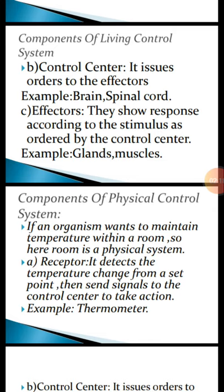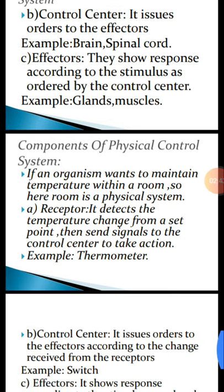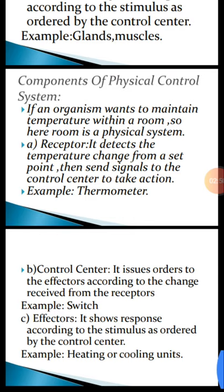Now we will discuss the components of the physical control system. Generally, if an organism wants to maintain temperature within a room, the room will be the physical system. It also has three components. The first is the receptor or sensor, which detects temperature change from a set point and sends signals to the control center. For example, a thermometer. The second component is also the control center, which issues orders to the effectors according to the stimulus received from the receptors. Its example is a switch.